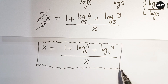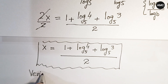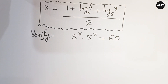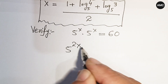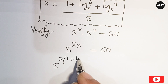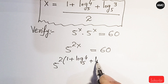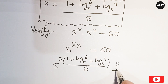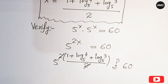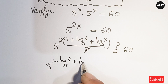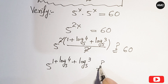We can verify our answer by substituting this value of x back into the original problem: 5 to the power x times 5 to the power x equals 60. Simplifying, we write 5 to the power 2x equals 60. Substituting x, we get 5 to the power 2 times the quantity 1 plus log 4 to base 5 plus log 3 to base 5, all over 2, which equals 60. The 2s cancel, giving 5 to the power 1 plus log 4 to base 5 plus log 3 to base 5.